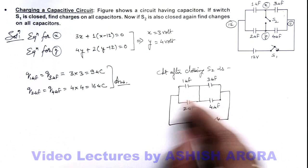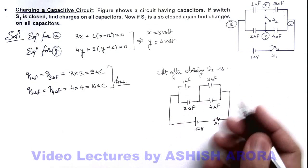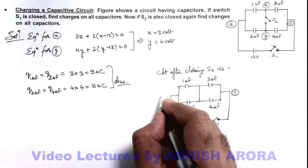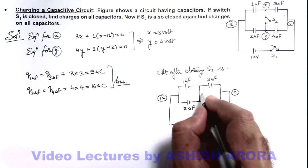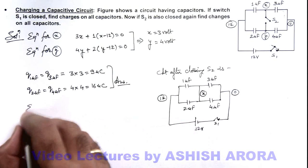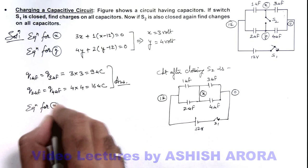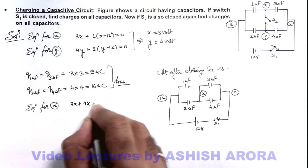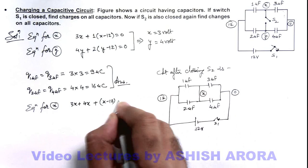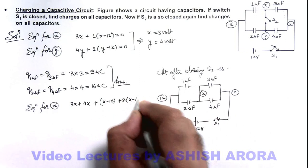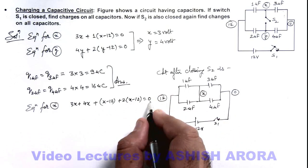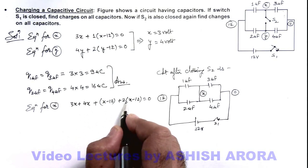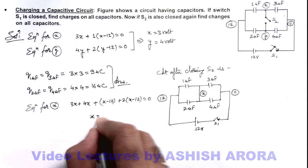Alternatively, we can calculate charges by distribution of potential. Taking zero potential on the right as reference, the left side is 12 volts, and the middle node has a common potential x. Writing the equation for x: 3x plus 4x plus 1 multiplied by x minus 12 plus 2 multiplied by x minus 12 equals zero. Simplifying: 7x plus 3x equals 10x equals 36, so x equals 3.6 volts.